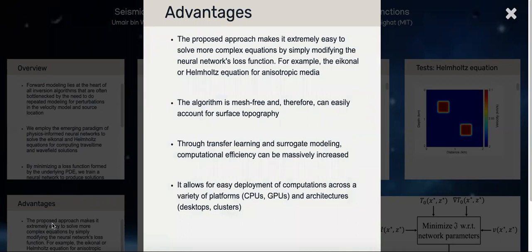What are the advantages of doing so? The proposed approach makes it extremely easy to solve very complex equations. If you want to incorporate a lot of physics such as adding anisotropy or attenuation, it's essentially the same as solving the isotropic case because you just need to replace the loss function by the corresponding PDE residual. For example, it takes a lot of effort to solve the orthorhombic eikonal equation compared to the isotropic one, but in this case it becomes very easy because you just replace the residual, and similarly for the Helmholtz equation.